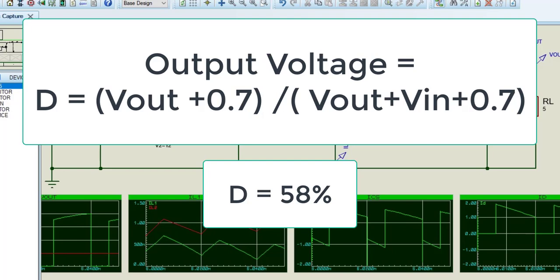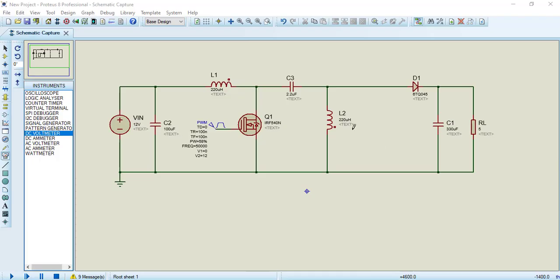In other words, if we provide a 58% duty cycle to MOSFET, the output voltage will be about 16 volts. Because duty cycle is greater than 50%, circuit will behave like a boost converter. To provide pulse width modulation signal to MOSFET, we used a PWM generator signal of Proteus. Now place all components in the Proteus window and make a connection according to the circuit diagram.